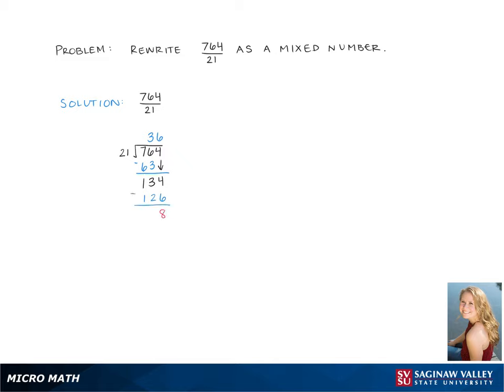Subtracting these two numbers gives us 8, which is our remainder. So our answer to the long division is 36 remainder 8.